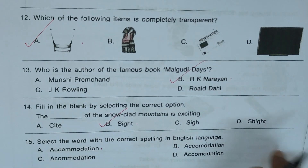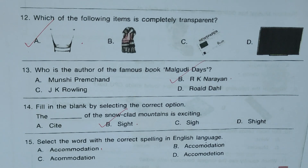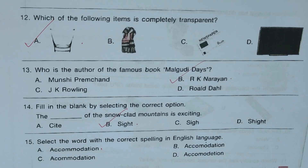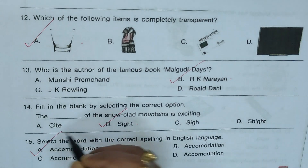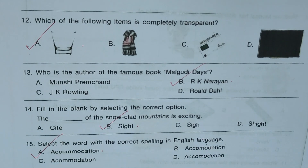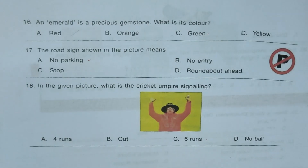Question 14: Fill in the blank — 'The dash of the snow-clad mountain is exciting.' A) Site, B) Sight, C) Side, D) Cite. Answer is B) Sight. Question 15: Select the word with the correct spelling. The correct spelling is A) Accommodation, which is the correct answer.